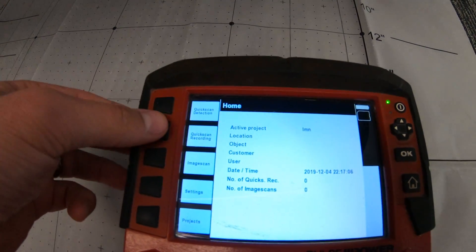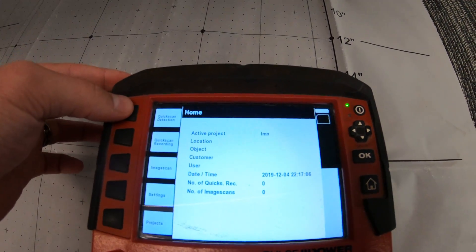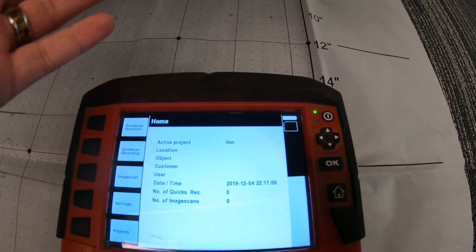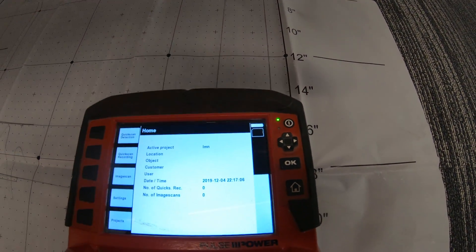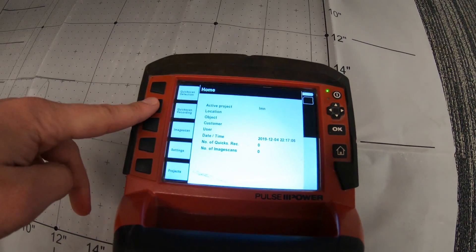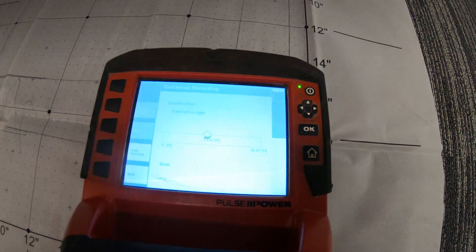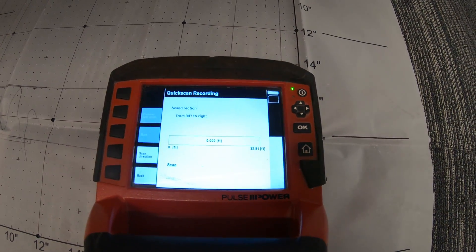This video is going to be going over quick scan recording. Now I know I did quick scan already, and that's where you do a live read of what you're reading in a one directional area. I'm going to do quick scan recording, and this is where you're going to be able to record those quick scans, but you're not going to be able to see the live read as you go.